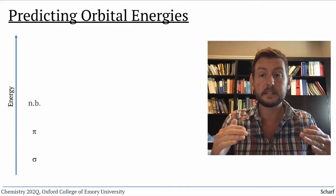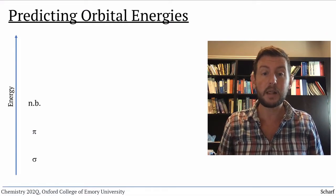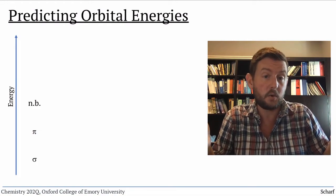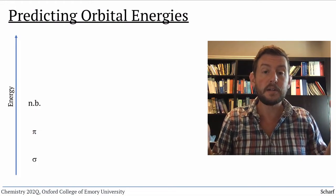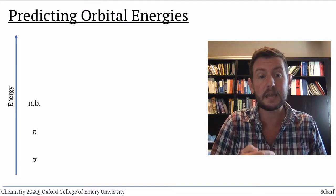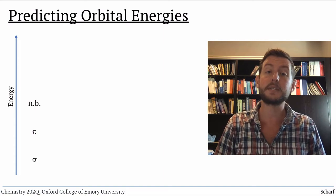Next come nonbonding orbitals. These aren't stabilized by spreading out across multiple atoms as bonding orbitals. Nonbonding orbitals are usually isolated on a single atom and are at the same energy as the atomic orbitals they came from.